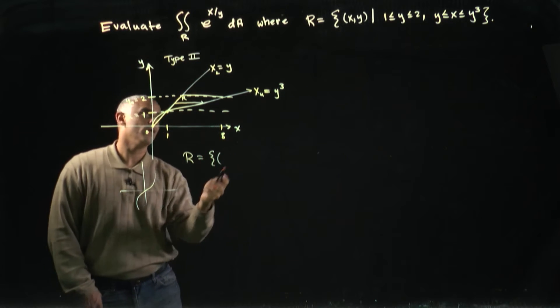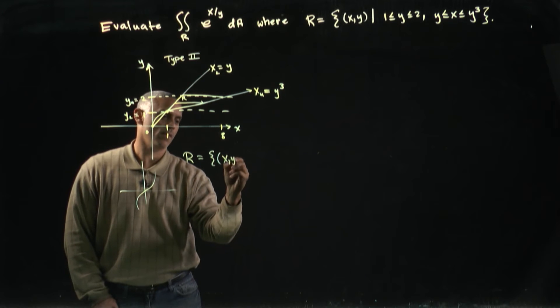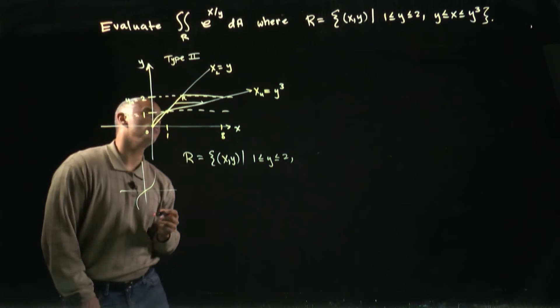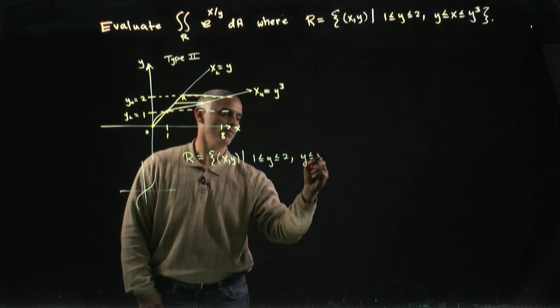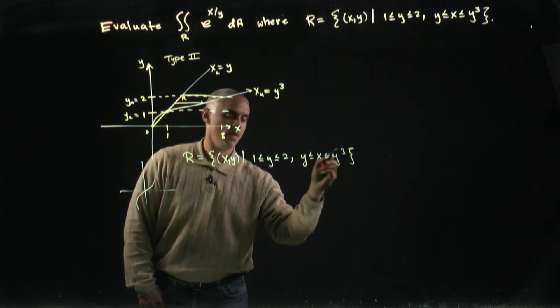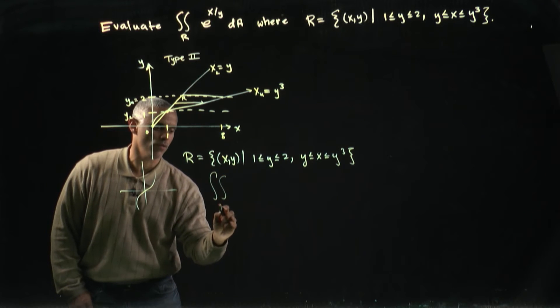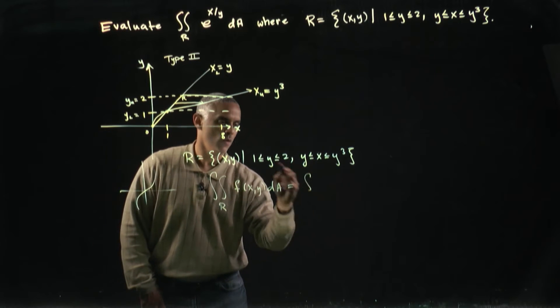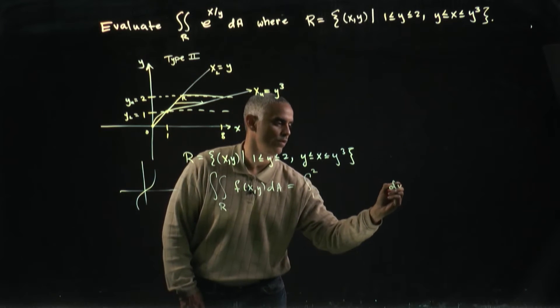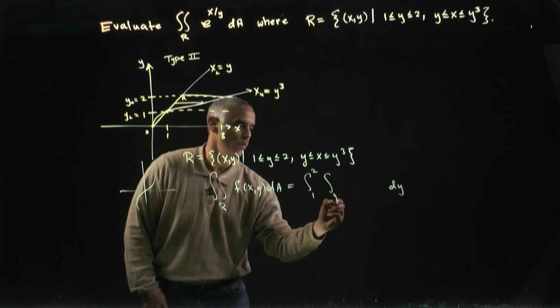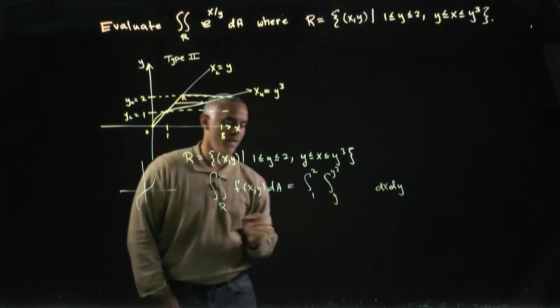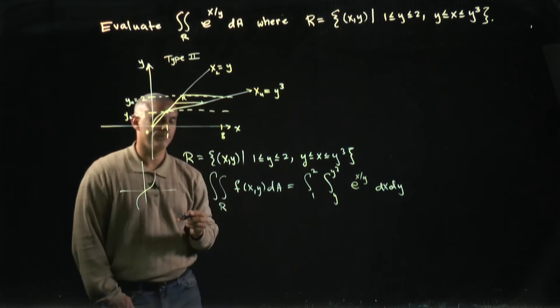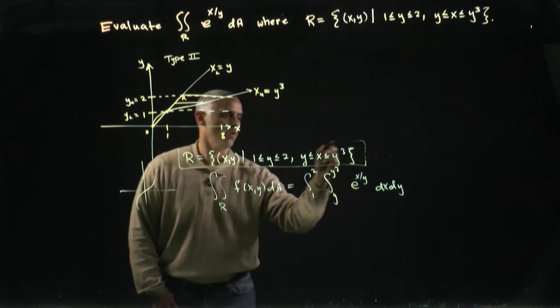Now, as we have above, our x, y, where y is bound between one and two, and x between y and y cubed. And with this, I can easily write my double integral over R of my function f(x,y) dA as y being bound from one to two, so I'll throw a dy on the outside, x from y to y cubed, I'll put a dx on the inside, and my function e to the x over y.